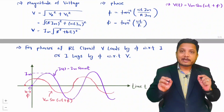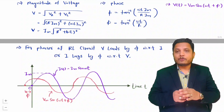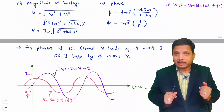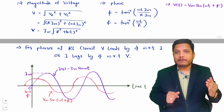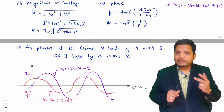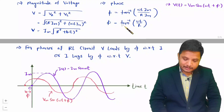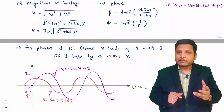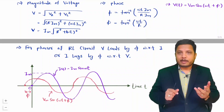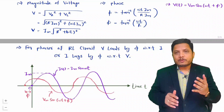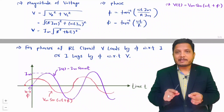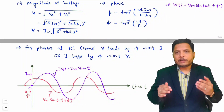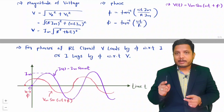In an RL series circuit, voltage leads by some angle φ = tan⁻¹(ωL/R), and the magnitude of voltage is Im·√(R² + (ωL)²), which is the impedance. You can also use Laplace by replacing s = jω to convert from Laplace domain to frequency domain. We will practice this in future videos with problems. I hope you have understood this. Thank you so much for watching this video.